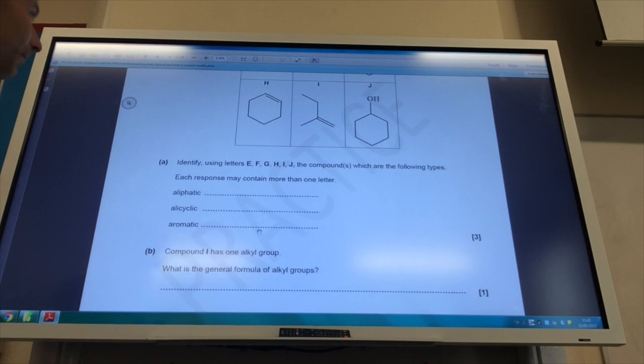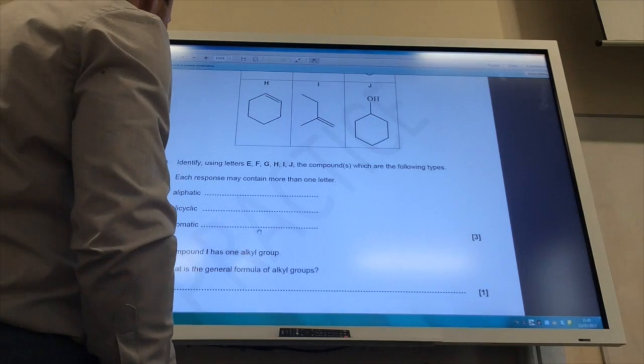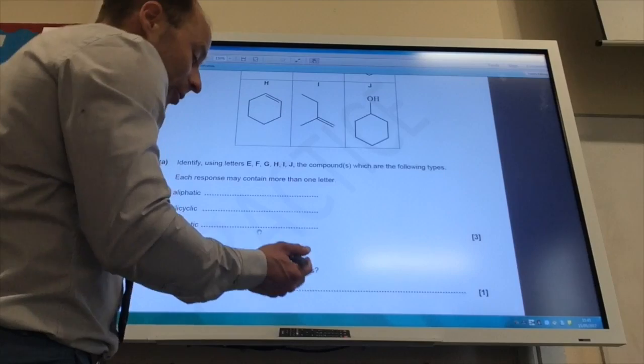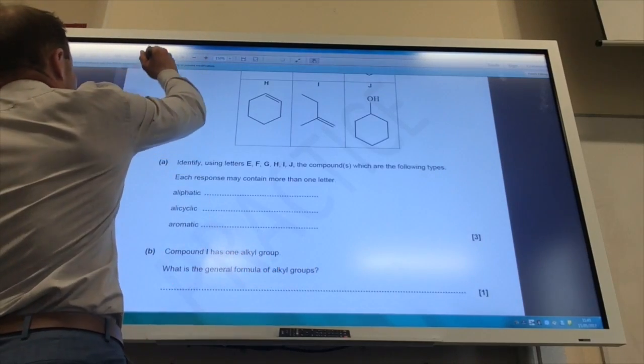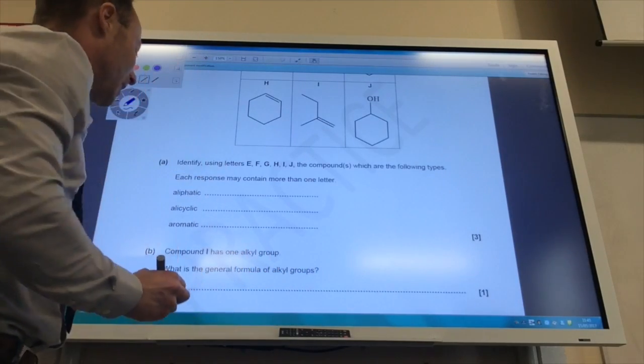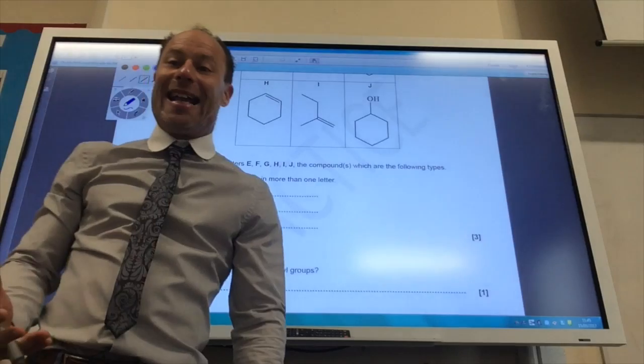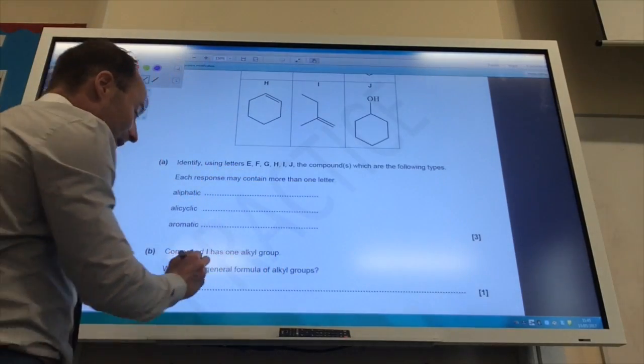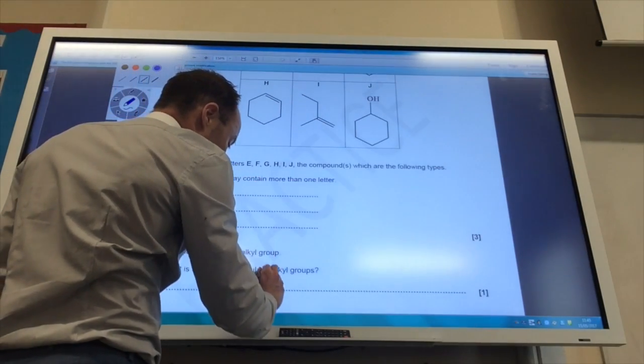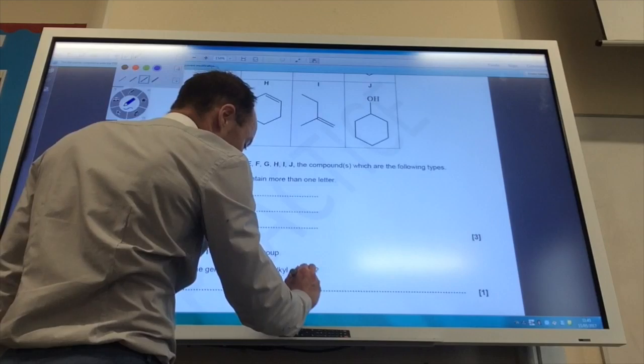Right, compound I has one alkyl group. Well, it's a general form of an alkyl group. Remember, an alkyl group is going to be something like CH3, C2H5. It's an alkane which is lost a hydrogen. So it's going to be CnH2n+1.